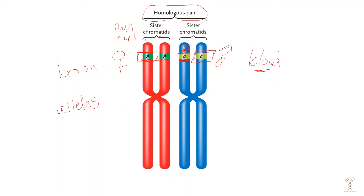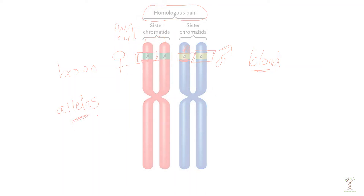When mom makes gametes she will only be donating the brown hair allele. Different gametes are going to get different chromosomes — we talked about that in the meiosis video, how the chromosomes are split up. So these different versions of a gene are called alleles.